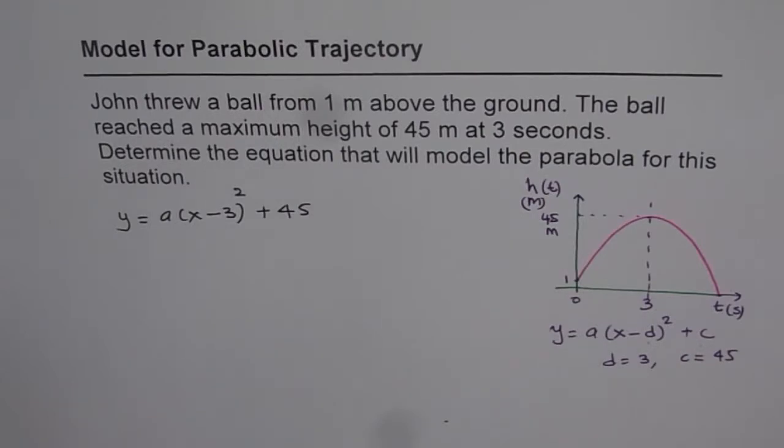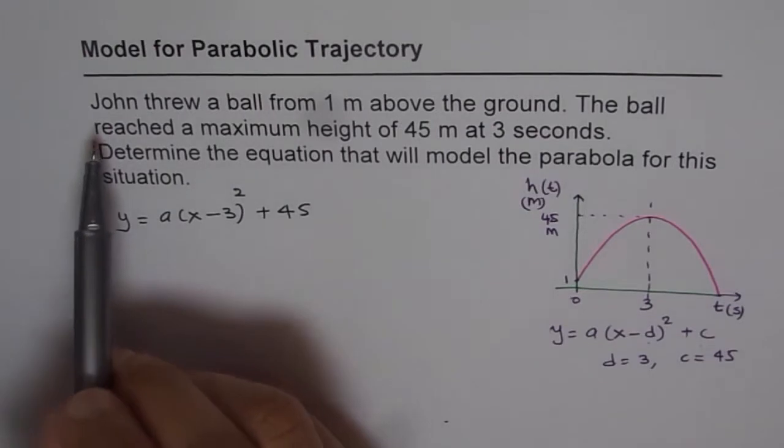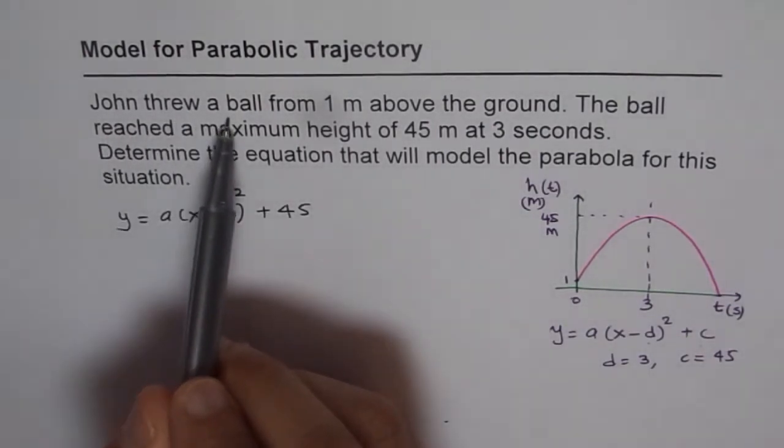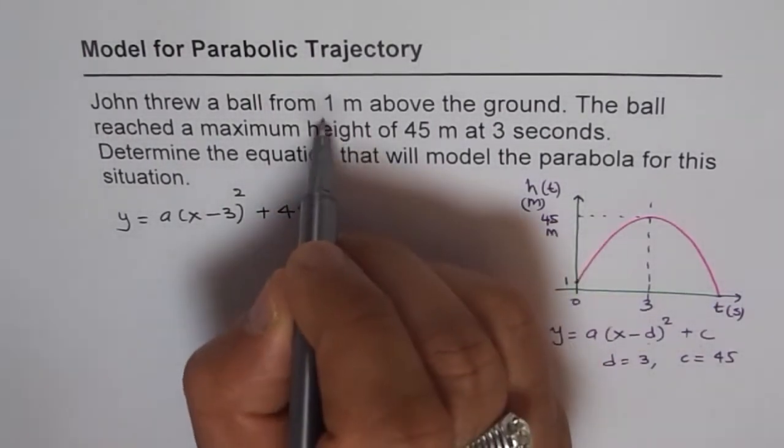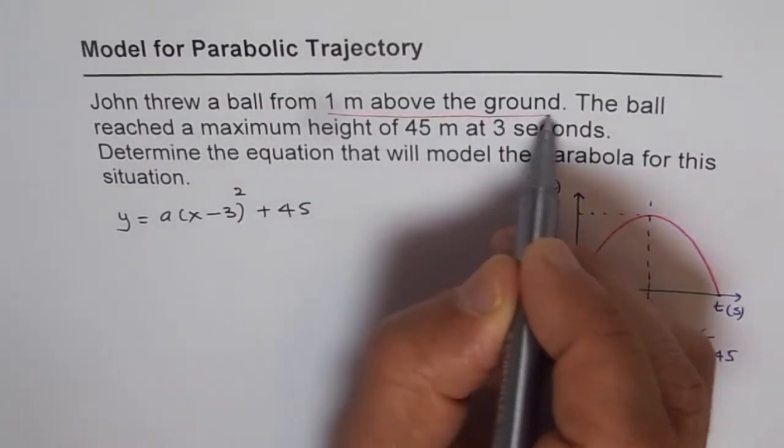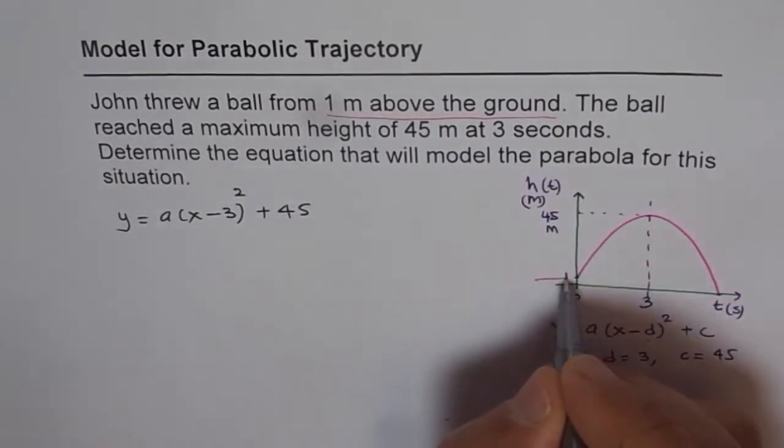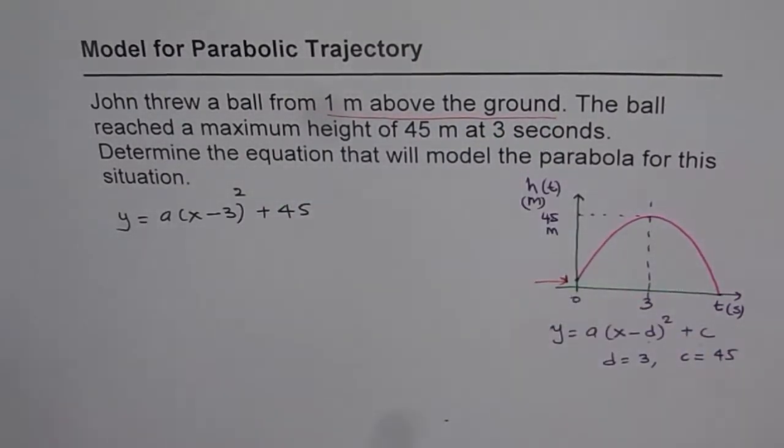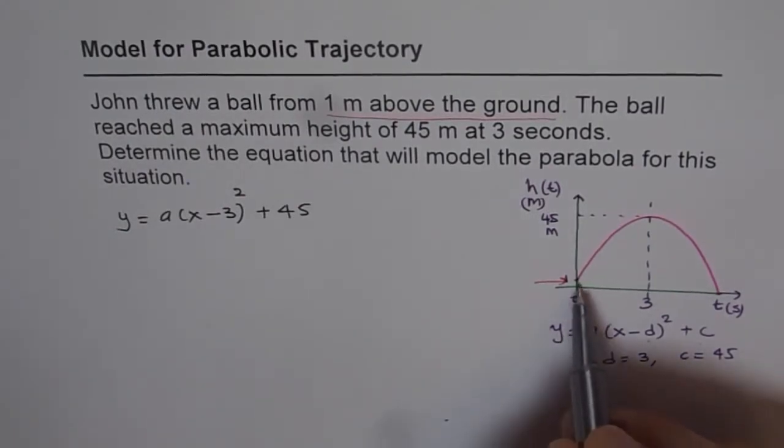Now to find a we need one more condition. Now the condition is fortunately given to us. John threw a ball from one meter above the ground. That is the condition. One meter above the ground. It means what?